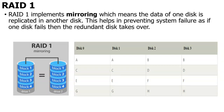Then RAID 1 — mirroring. In that case, if one disk is failed, the entire data will get lost and we cannot recover it. So for that, RAID 1 has introduced a mirroring concept. The data whatever present in disk 0 will be stored in disk 1. The data whatever present in disk 2, that will be stored in another disk also. So if any one of the disks is getting failed, with the help of the other disk you can retain the data. So this is RAID 1.